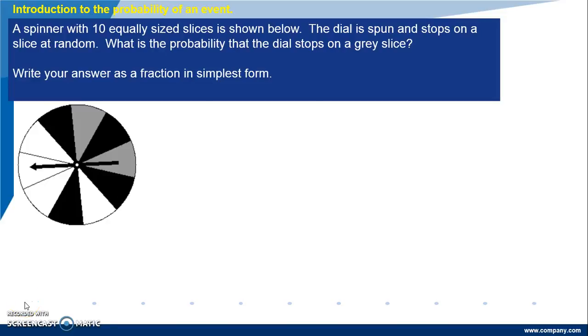Hello. In this video you will learn about simple probabilities. A spinner with 10 equally sized slices is shown below. The dial is spun and stops on a slice at random. What is the probability that the dial stops on a grey slice?